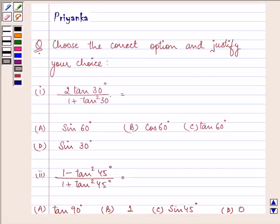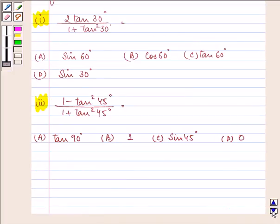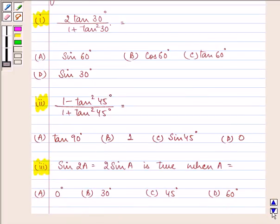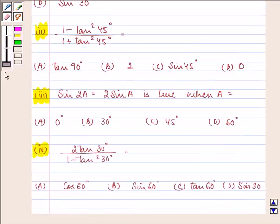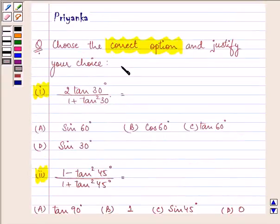Hello friends, how are you all today? The question says choose the correct option and justify your choice. Now here we have four parts to the given question. We have choices with every part and we need to choose the correct option and justify our answer.